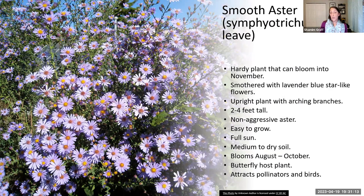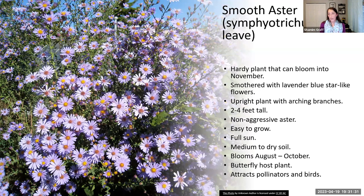If the New England aster was a little too bright for you, we have smooth aster, which is just a little bit more pale. It tends to be slightly taller and wider than New England aster, but it's not an aggressive spreader — and while some asters can be, this one is not. It's easy to grow, likes full sun, and can handle drier soils. It blooms in late summer into fall, and pollinators and birds love it, especially as they're migrating through.